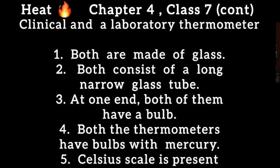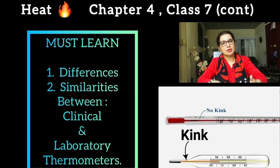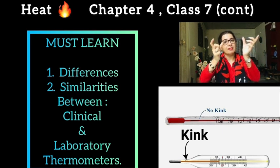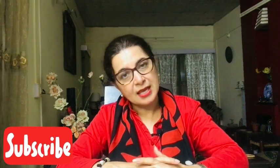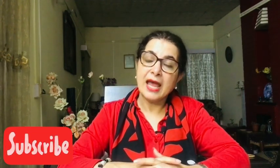These differences are very important from an examination point of view. Students should learn the diagrams of both thermometers and list the differences. When answering exam questions, draw a small diagram of each thermometer and then list the differences so you don't miss any. In the subsequent videos, we will study how heat is transferred through the three main processes: conduction, convection, and radiation. We will also study why dark-colored objects absorb heat more than light-colored ones, and about sea breeze and land breeze. Stay connected on the channel Rise to Shine.